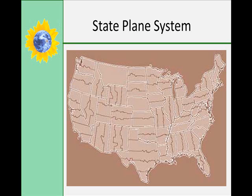The number of zones in a state is usually determined by the area the state covers, ranging from 1 in Montana to as many as 10 in Alaska. Each zone has a unique central meridian. Idaho, for example, uses a transverse Mercator projection and is divided into three zones: east, central, and west.